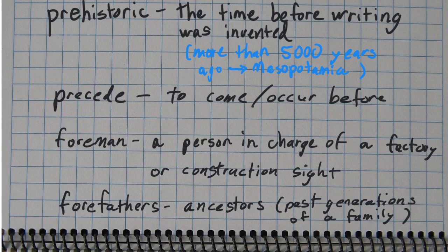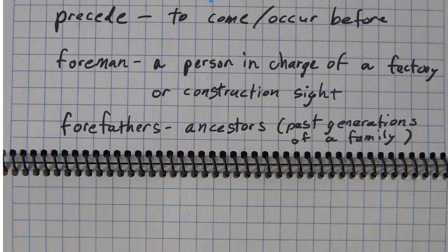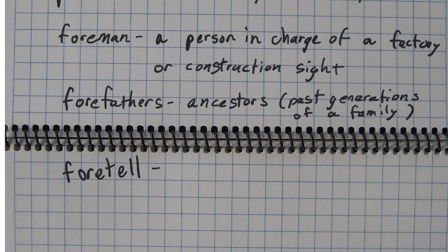And then next, forefathers. Forefathers refers to your ancestors or past generations of a family, so your great-grandmother and grandfather are your forefathers, your ancestors. And then the word foretell can be defined with another one of your words, which is predict.